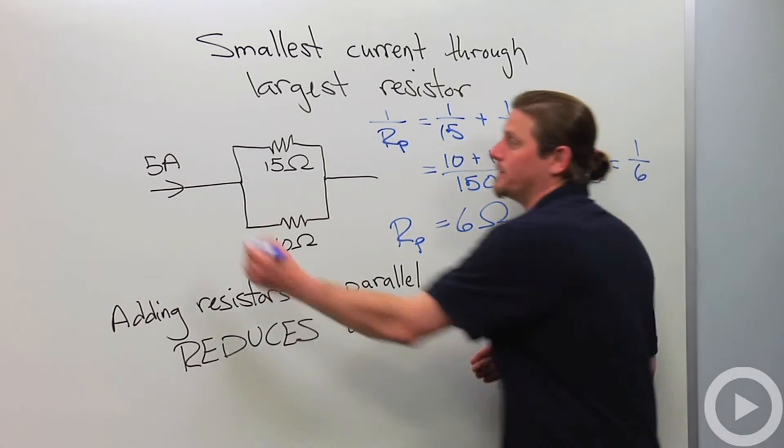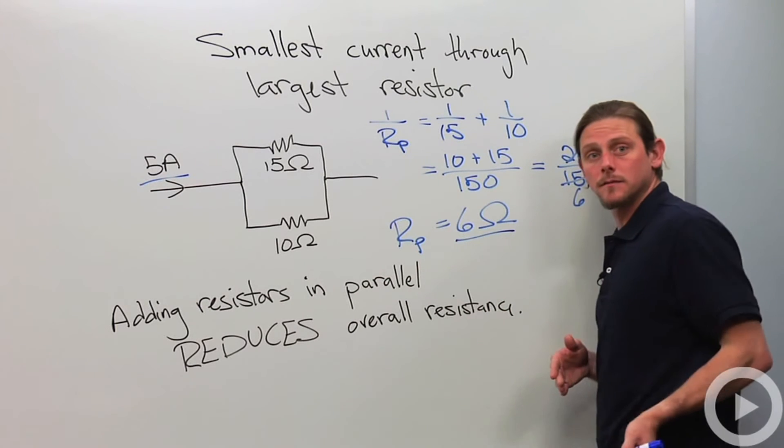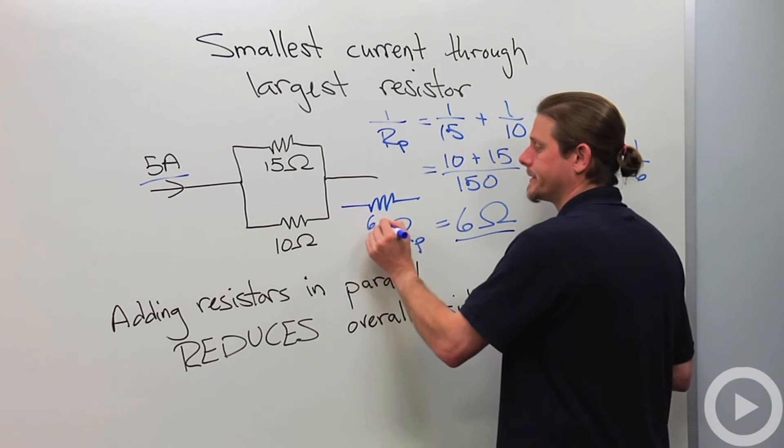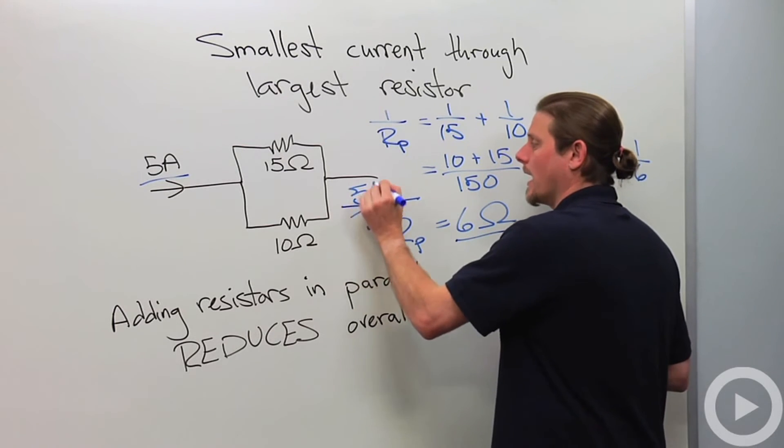So what is the potential difference? Well, the potential difference got to be 5 times 6 because this network is really just this, 6 ohms, 5 amps going through.